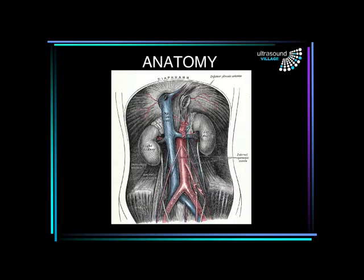To refresh your anatomy, this is the retroperitoneal structures in the abdomen. We have the midline structure, being the aorta, with the celiac axis, the superior mesenteric artery and the inferior mesenteric artery coming off anteriorly. To the right of that we have the inferior vena cava which of course sits underneath the liver. The aorta sits on top of the spine.